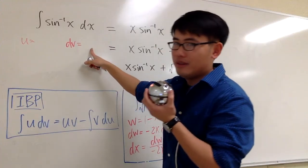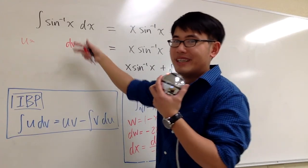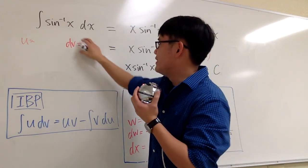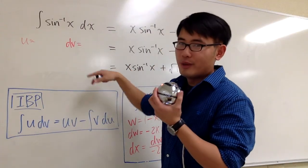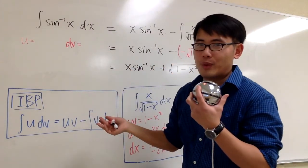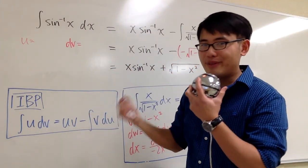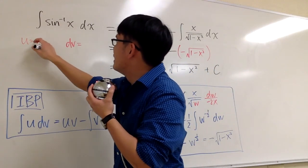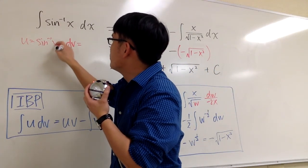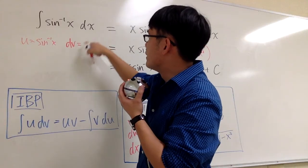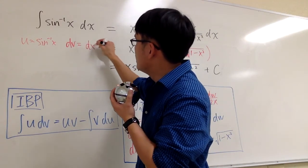If you put the inverse sine x for dv, you're just asking yourself the original question, because you have to integrate inverse sine x, but then that's exactly what we're trying to do. So we have no choice but put the inverse sine x for the u, and then for the dv, we'll just choose dx.